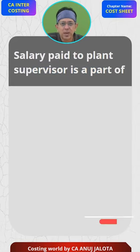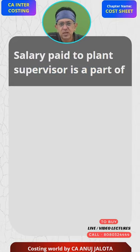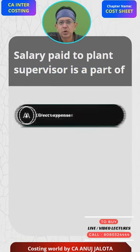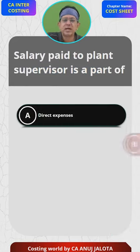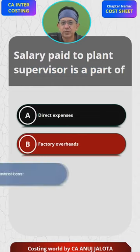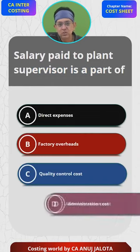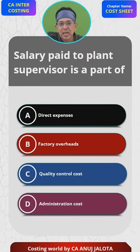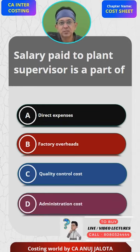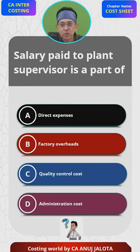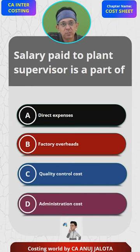Salary paid to the plant supervisor is part of: A. Direct expenses, B. Factory overhead, C. Quality control cost, D. Administration cost. Please think of the right answer and comment before I say the answer — that is very important.